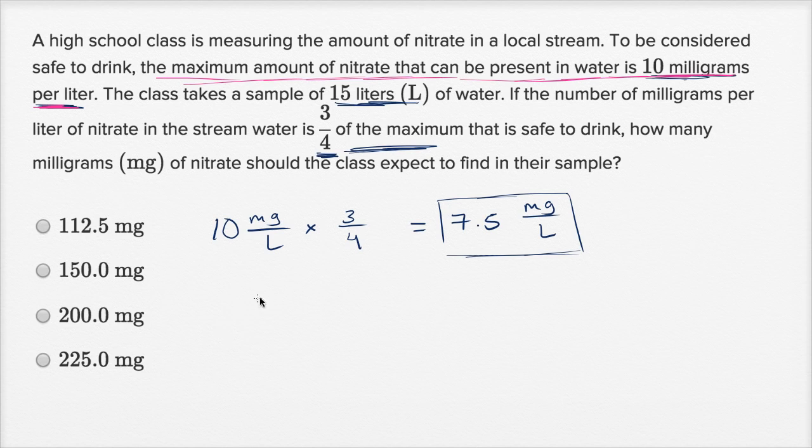So the total number of milligrams they find? Well, you take the liters of water, 15 liters, and then multiply that times the concentration, 7.5 milligrams per liter.